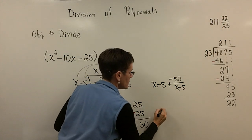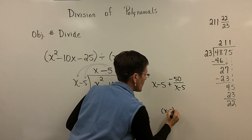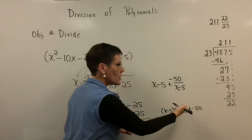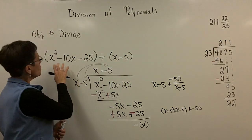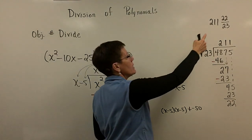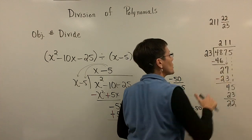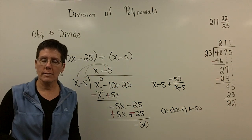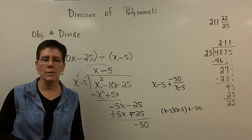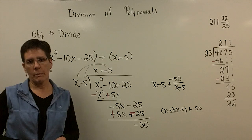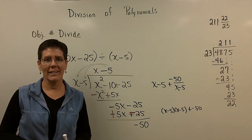If you took this binomial times this binomial, if you took 23 times 211 and added 22 to it, x minus 5 times x minus 5 plus the negative 50, foiled it, added the negative 50, you would get x squared minus 10x minus 25. Just like over here. This times this plus this would give you the 4875. So you can check these. One more video clip on this long division. I call it long division by a polynomial. And I'm just going to make the problems a little bit bigger and I'm going to put some coefficients on them. So part two is on its way.